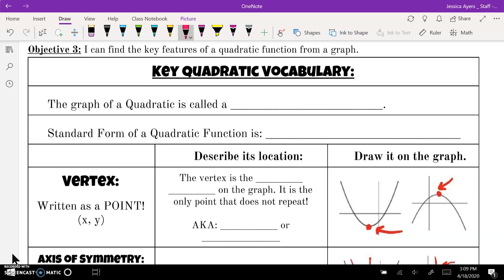So first off, we know that the graph of a quadratic is called a parabola. It's kind of a weird word, but it is pronounced pa-ra-ba-la, parabola.